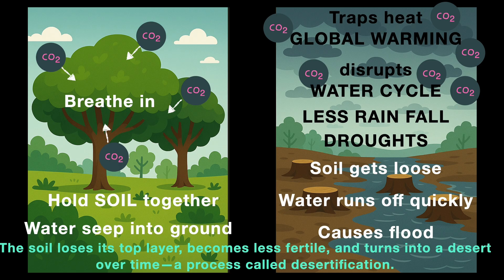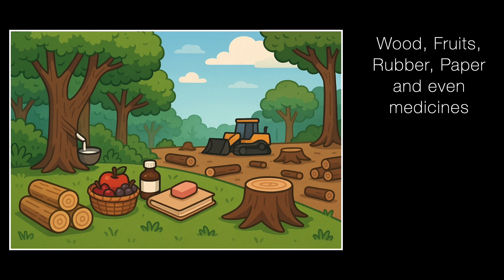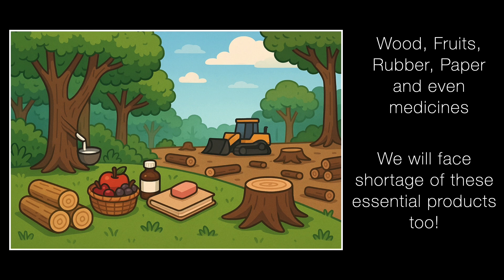This process is called desertification. Forests give us so much: wood, fruits, rubber, paper, and even medicine. If we keep cutting down trees, we'll face shortages of these essential products too.